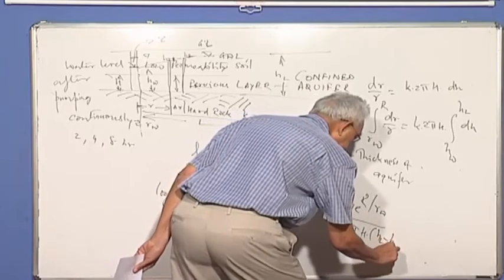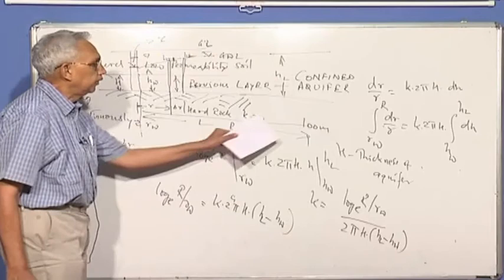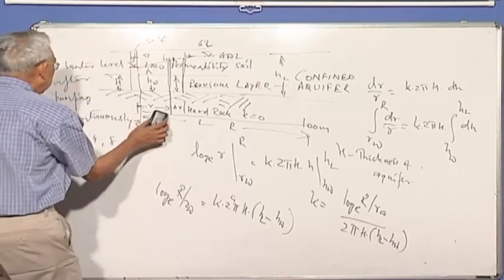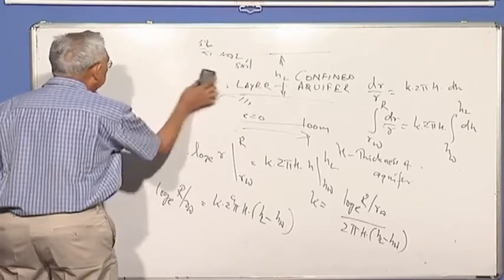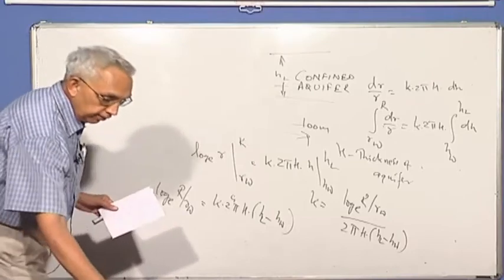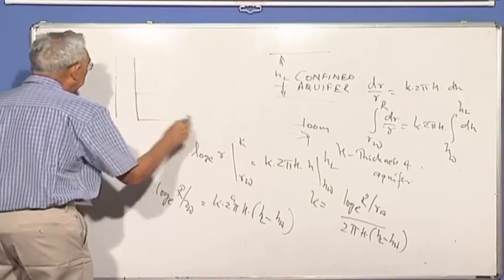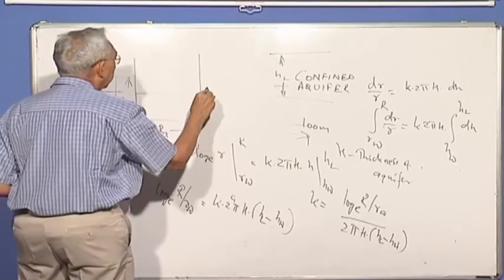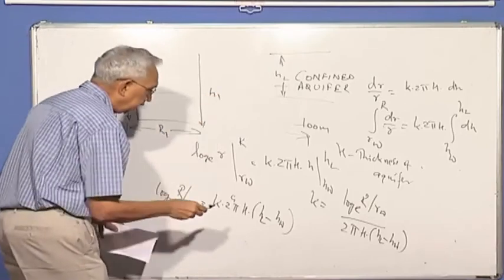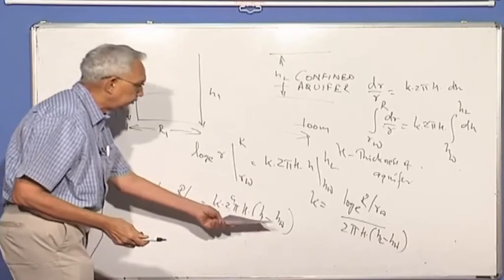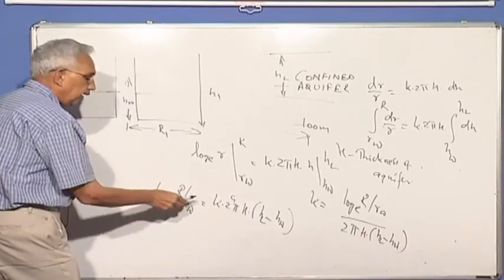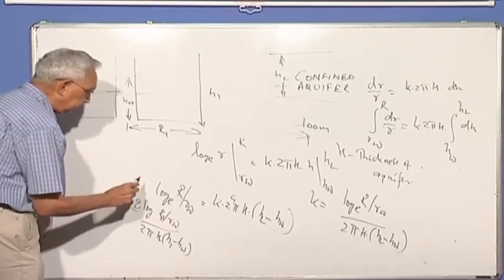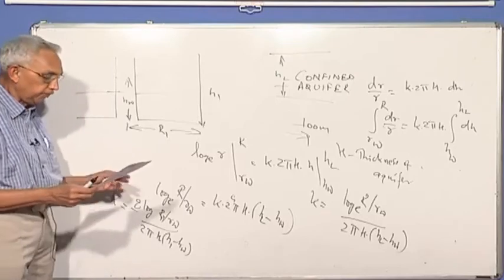And you can also do that instead of going very very far, maybe 100, 200 meters, what we sometimes do is simply put two observation wells, or you take the water level in the well, this is the aquifer, so I know HW at a distance R, I know the water level H1. So instead of HL and HW, I can have H1 and HW, and R1 and RW.